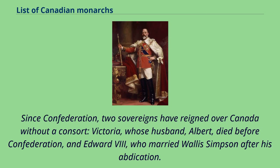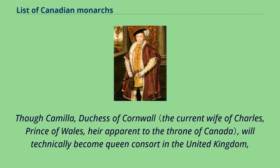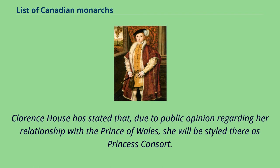Since Confederation, two sovereigns have reigned over Canada without a consort: Victoria, whose husband Albert died before Confederation, and Edward VIII, who married Wallis Simpson after his abdication. Though Camilla, Duchess of Cornwall, will technically become Queen Consort in the United Kingdom, Clarence House has stated that, due to public opinion regarding her relationship with the Prince of Wales, she will be styled there as Princess Consort.